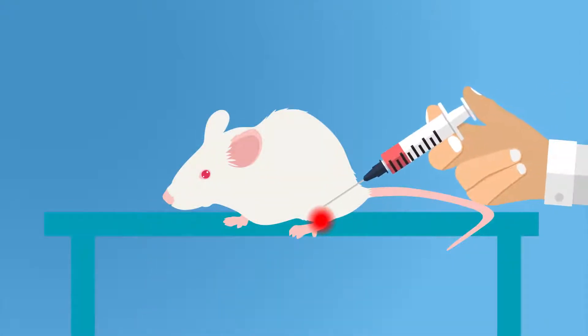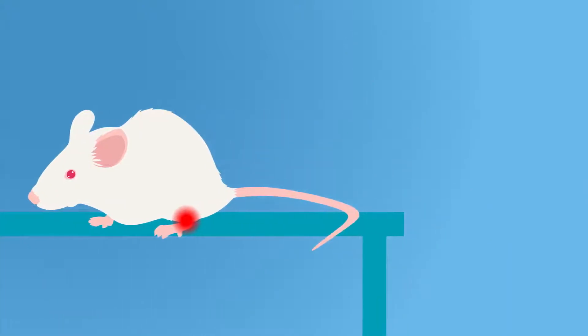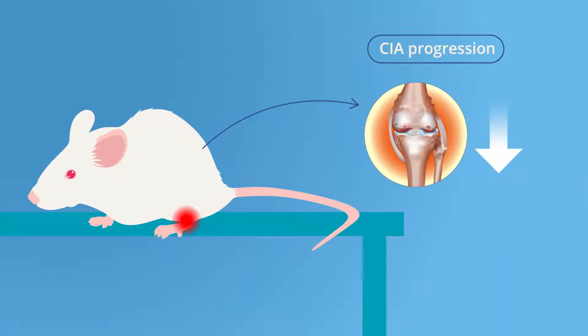Finally, the scientists injected TARM1-inhibitory, soluble TARM1 proteins into the knee of a mouse with CIA. This suppressed the progression of the disease.